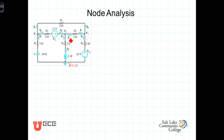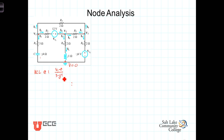Let's write KCL at node 1. The current leaving this node coming down will be V1 minus zero divided by the impedance there, which is 3 minus j4, plus the current leaving this node going in this direction, which is V1 minus V3 divided by the impedance of 2 ohms, plus the current leaving this node going in the third direction.